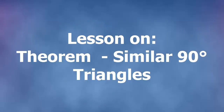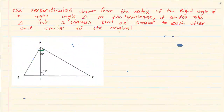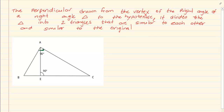Hi and welcome to my maths class. Today we are doing the theorem that states the perpendicular drawn from the vertex of the right angle of a right angle triangle to the hypotenuse divides the triangle into two triangles that are similar to each other and similar to the original.